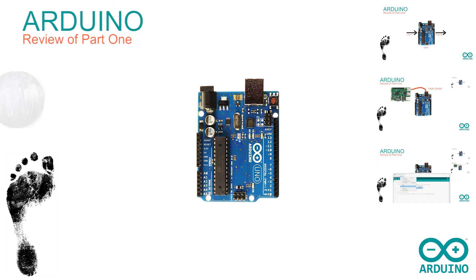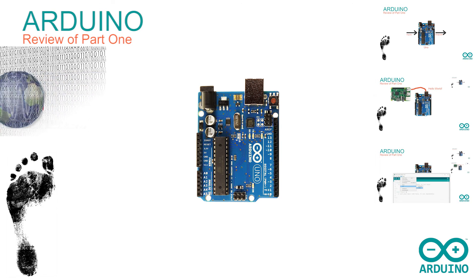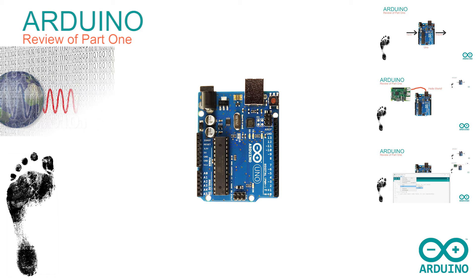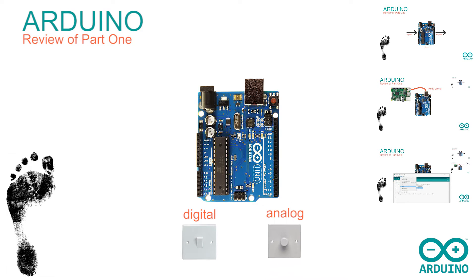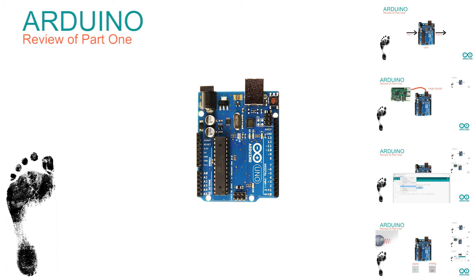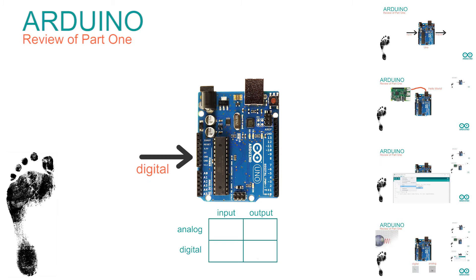We also saw that before the digital world of ones and zeros, ons and offs, there was the analog world where signals could vary and take any value in a continuous range. We used the light switch and the light dimmer to illustrate the difference. In the next step we're going to look at how to set up the Arduino so that it can deal with digital inputs and digital outputs, analog inputs and analog outputs.